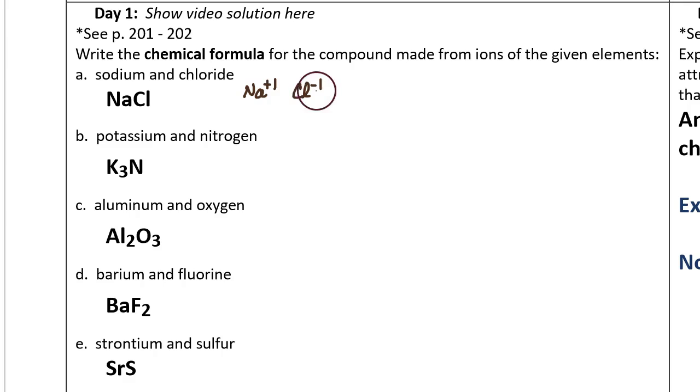That means you have to have an equal amount of positive charge as negative charge. Positive one plus negative one adds up to zero, a neutral compound, and so the formula just requires one sodium and one chloride.